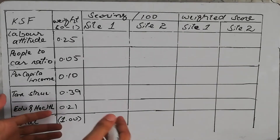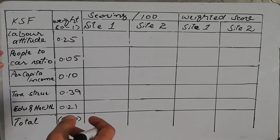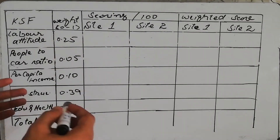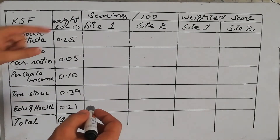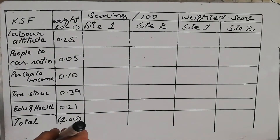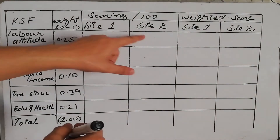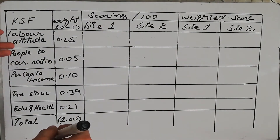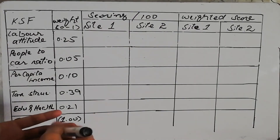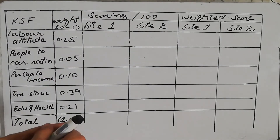The third step says we need to score each site according to each factor. We look at a site and see how much it scores for each factor — what is the capability of that site to provide us with that factor. Then we look at the second site and provide its score as well. We score all factors for each site on a scale, and in this example we are scoring each factor for each site out of 100.